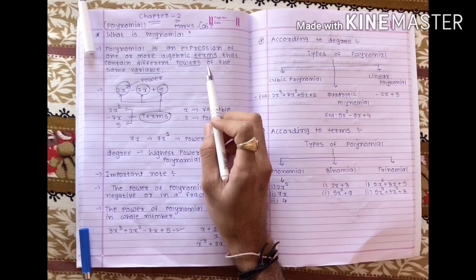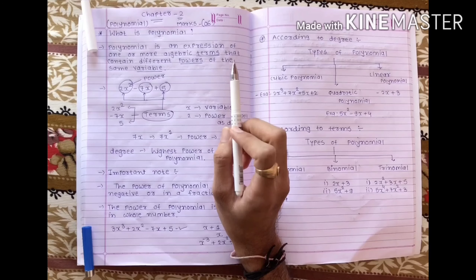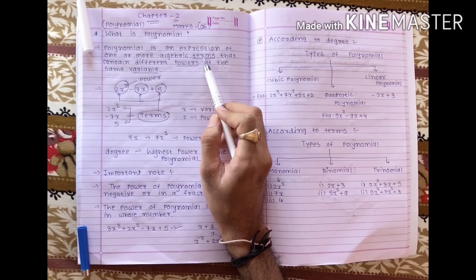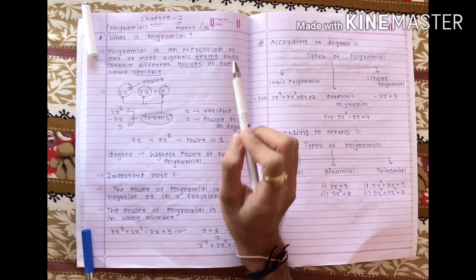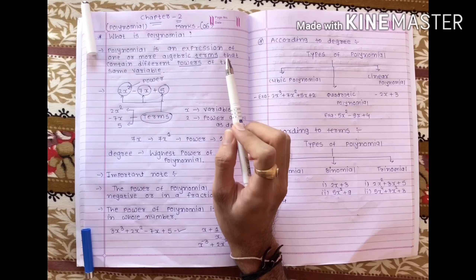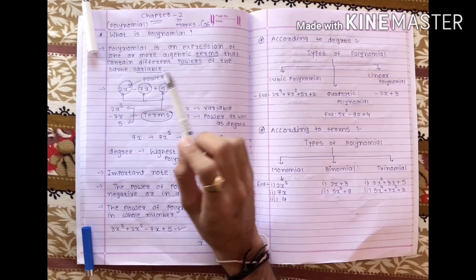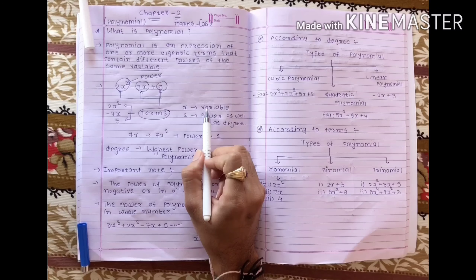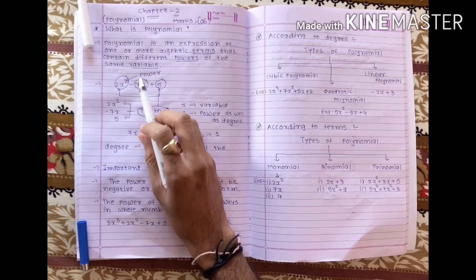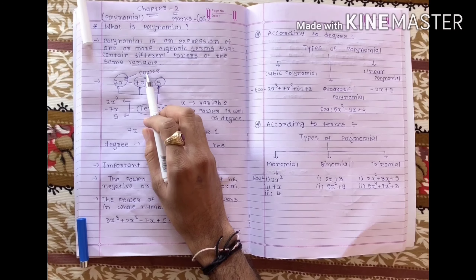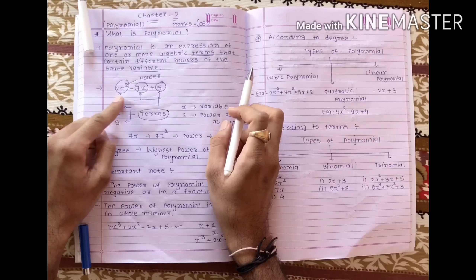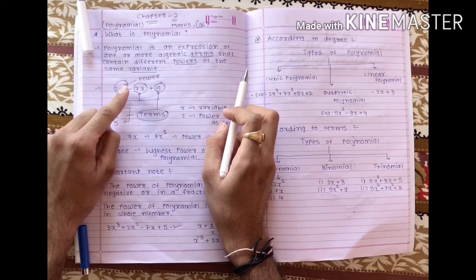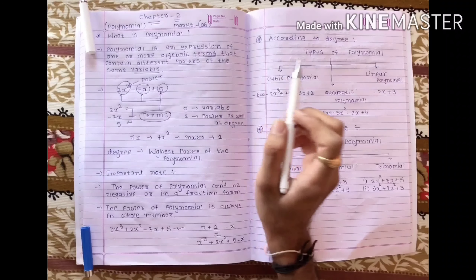In this definition you know about three terms. First is 'term'. What is the meaning of term? A term contains variable, coefficients, and powers. Term mein variable bhi hota hai, coefficient bhi hota hai, power bhi hota hai — aur usse banta hai term.